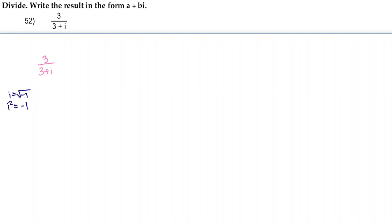In order to do that, we're going to multiply the denominator and the numerator by the conjugate of the denominator. So, the conjugate of 3 plus i is going to be 3 minus i. So, we're going to multiply the denominator by that and also the numerator by that.